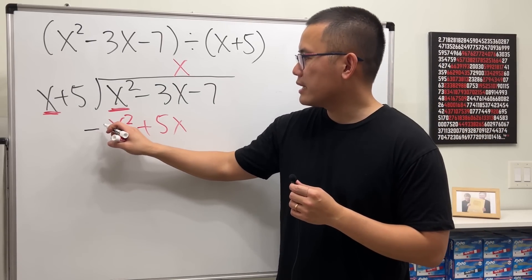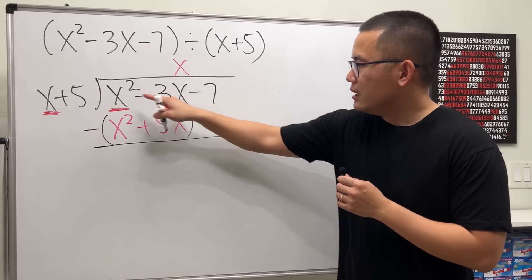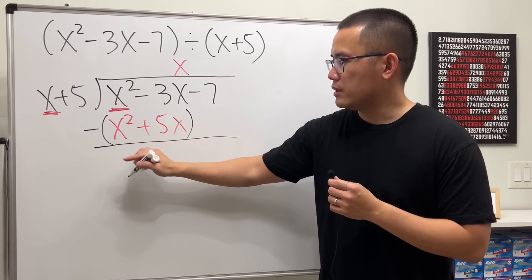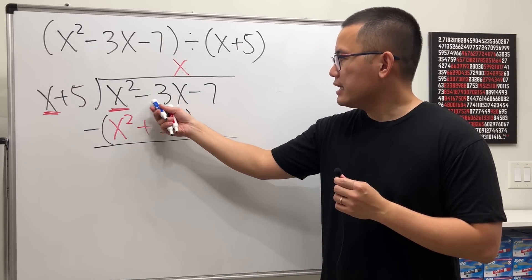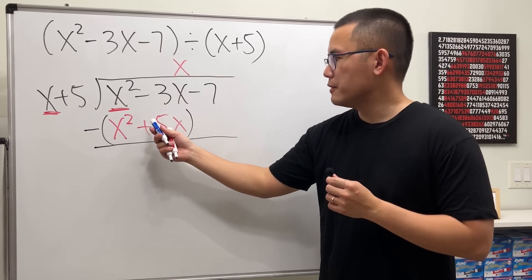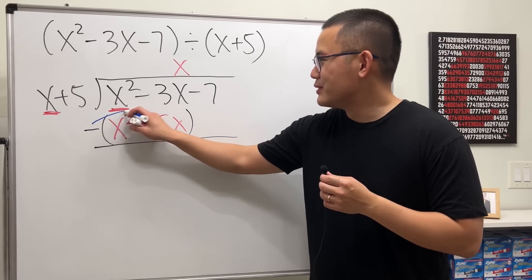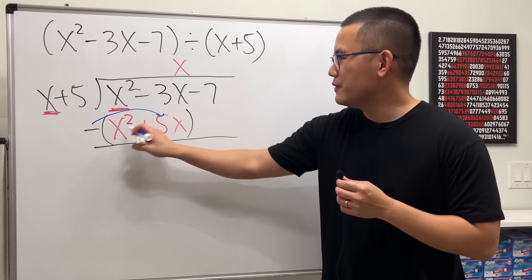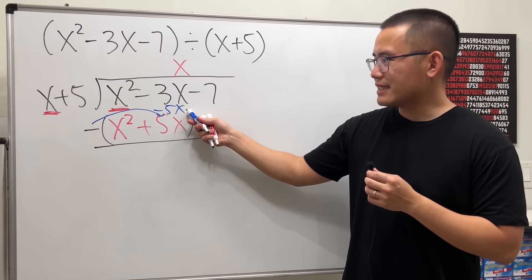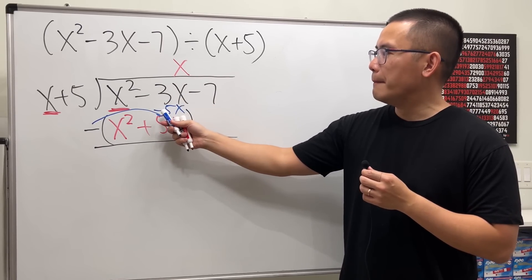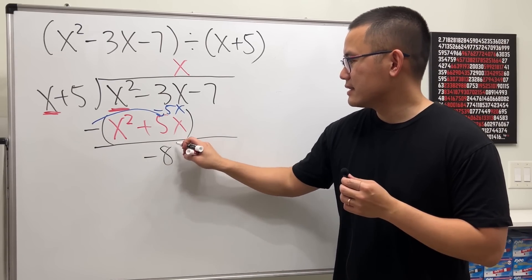And then remember, we subtract and put parentheses around this. x squared minus x squared is 0. Good. And for the next one, negative 3x minus 5x. So remember, we will have to distribute the negative. And that will give us a minus 5x. So we're looking at this and that. Negative 3x minus 5x gives us negative 8x.